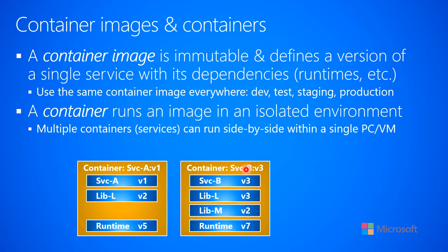We could create another container image for Service B version three. It has the Service B v3 code, and it depends on the same Library L — but notice it needs version three of Library L, whereas Service A needed version two. That's fine because these containers are isolated from one another, so we can have different library versions in each image. Service B also requires another library — Library M version two — and it uses version seven of the same runtime engine, as opposed to Service A which uses version five.